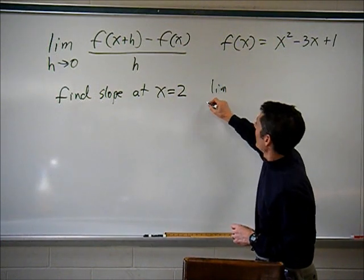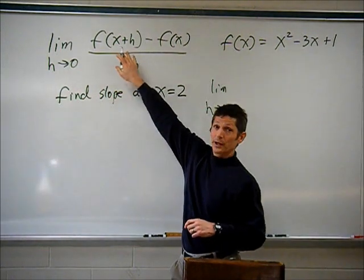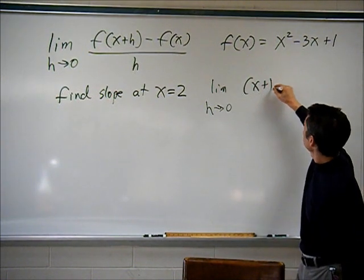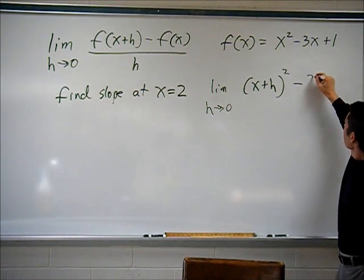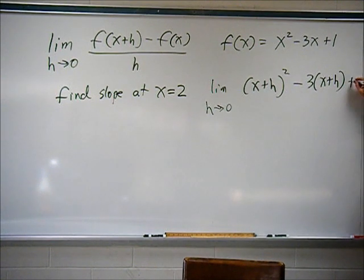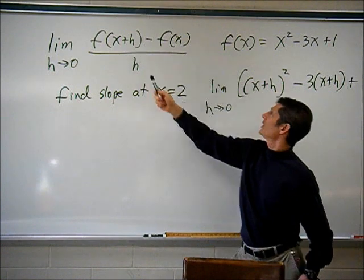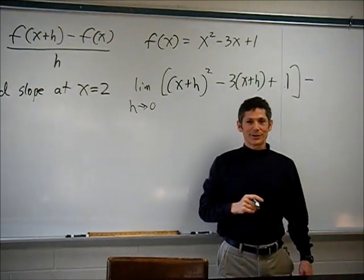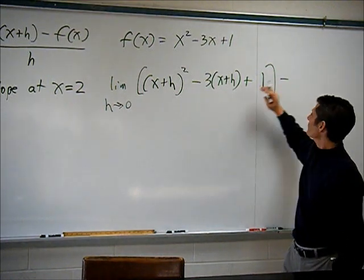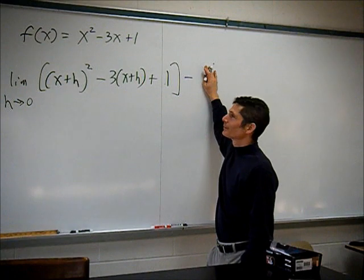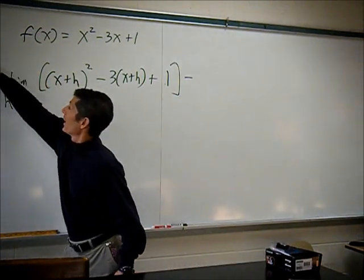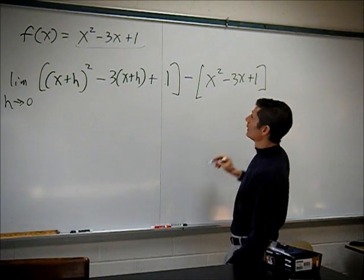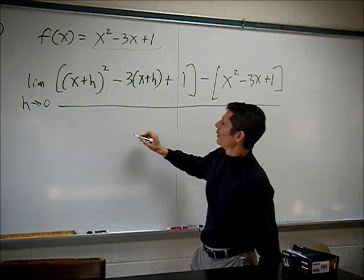So I would write: limit as h approaches zero of x plus h squared, minus three times x plus h, plus one — that's f of x plus h — minus f of x. What's f of x? You need to plug that whole thing right in — that's x squared minus three x plus one. All over h.